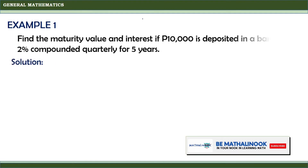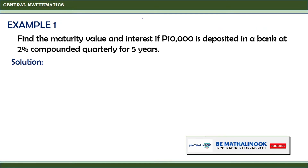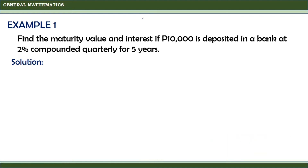Let us take this example: Find the maturity value and interest if P10,000 is deposited in a bank at 2% compounded quarterly for 5 years.